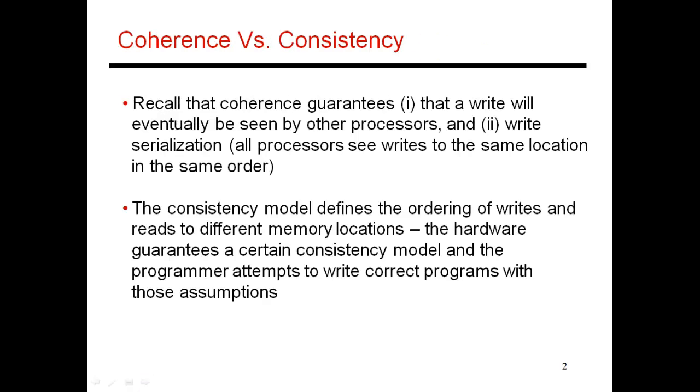So before I start, let me do a quick recap of what guarantees the coherence protocol is going to provide. And then I'll explain why we need this notion of a consistency model as well to explain what the program is going to do. So firstly, coherence ensures two conditions: the first is write propagation, and the second is write serialization.